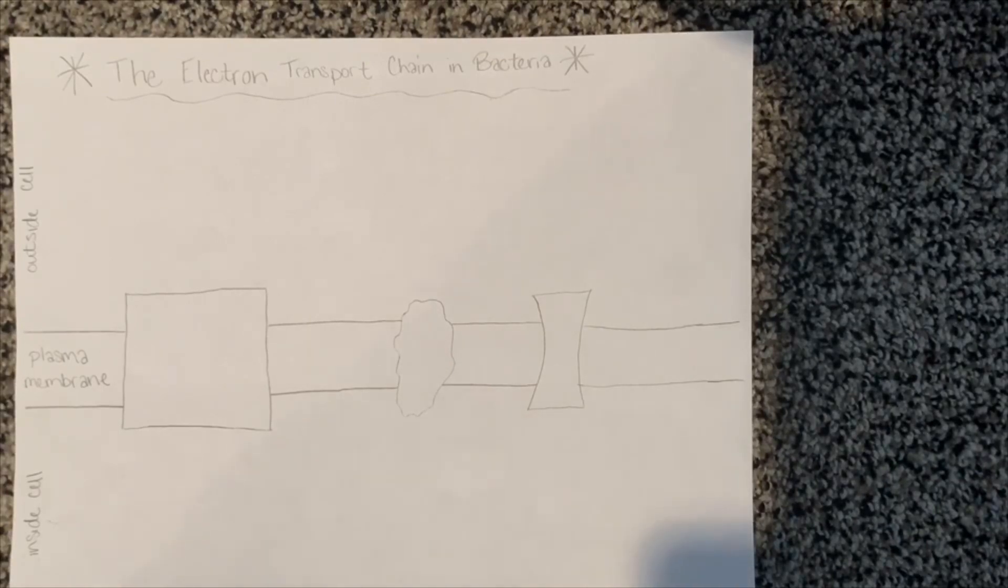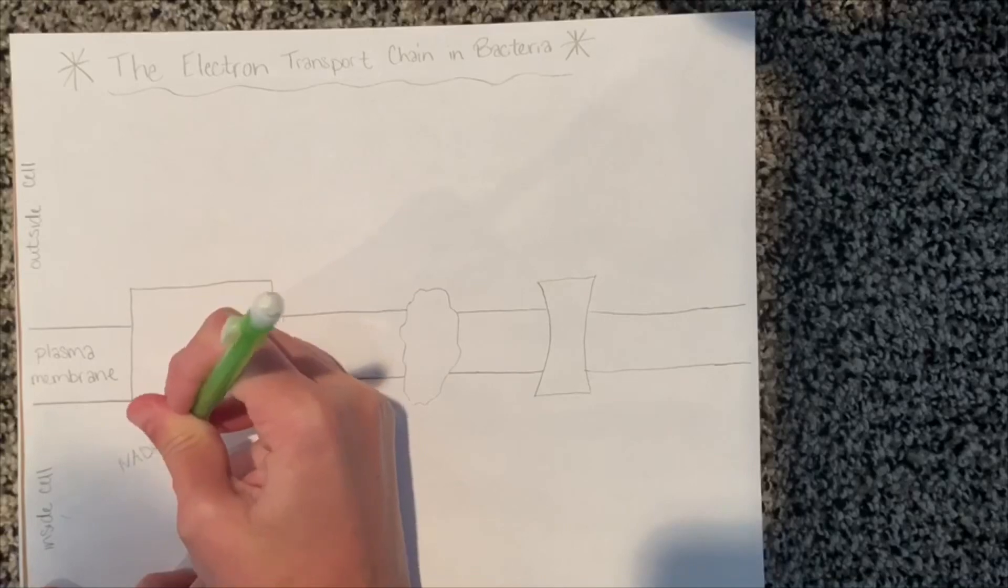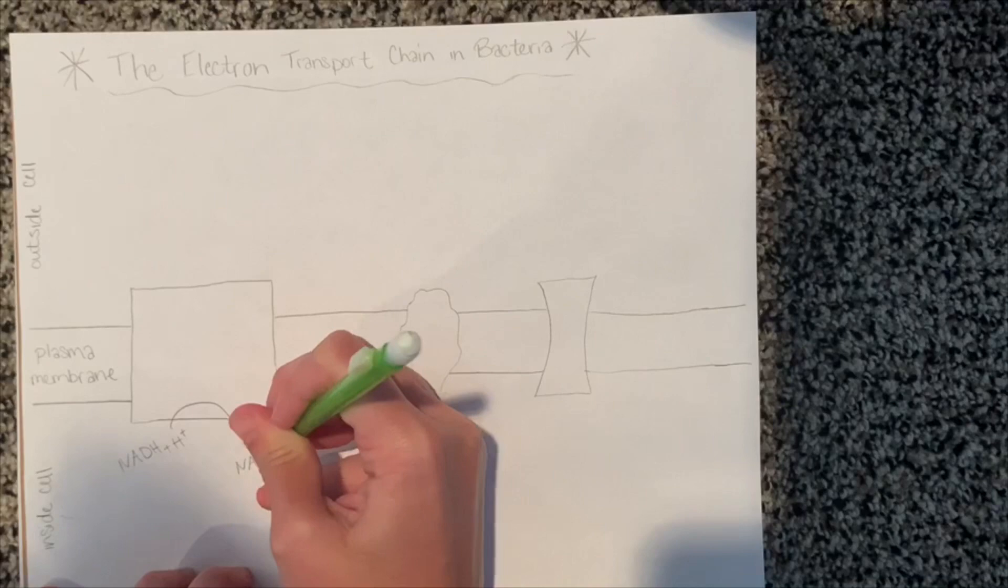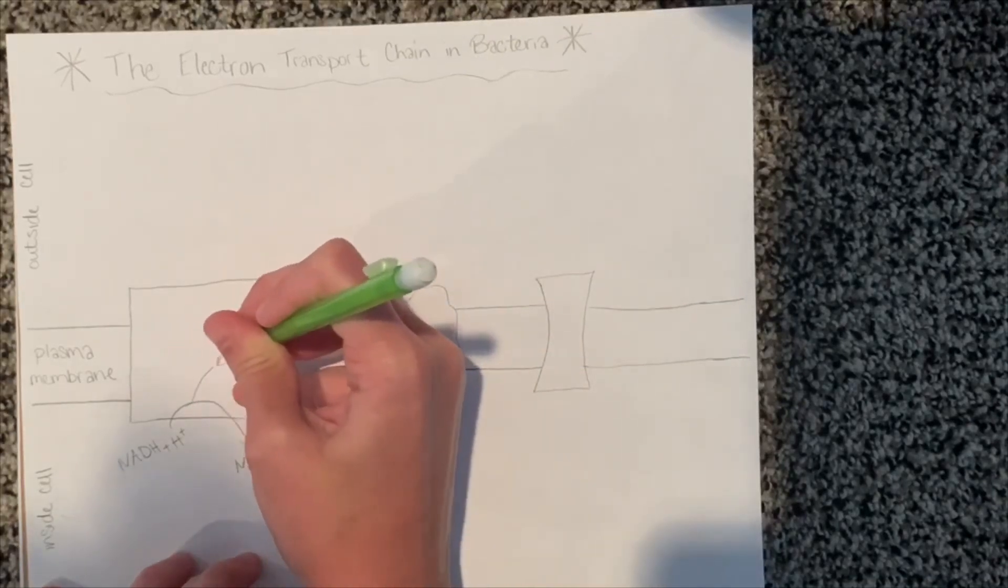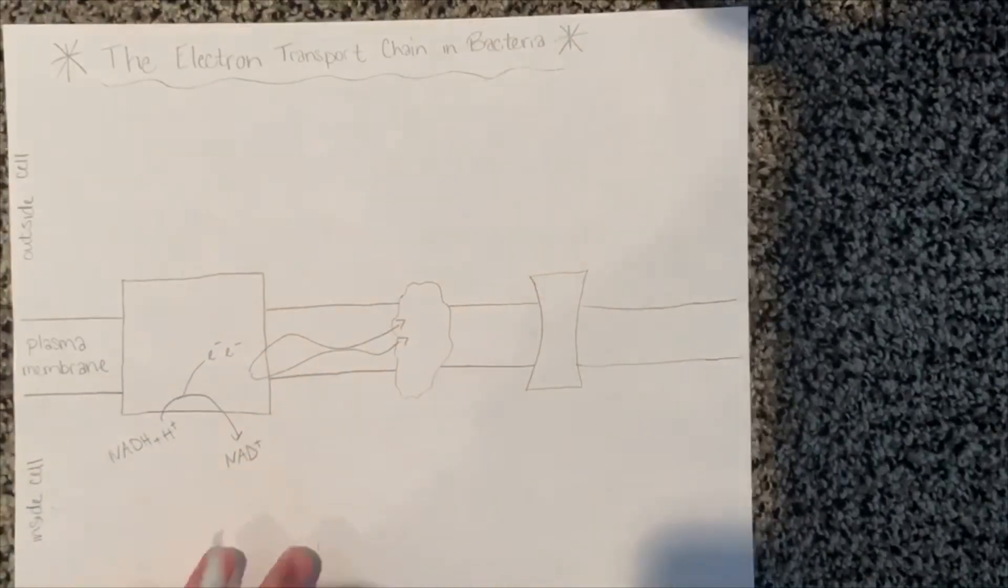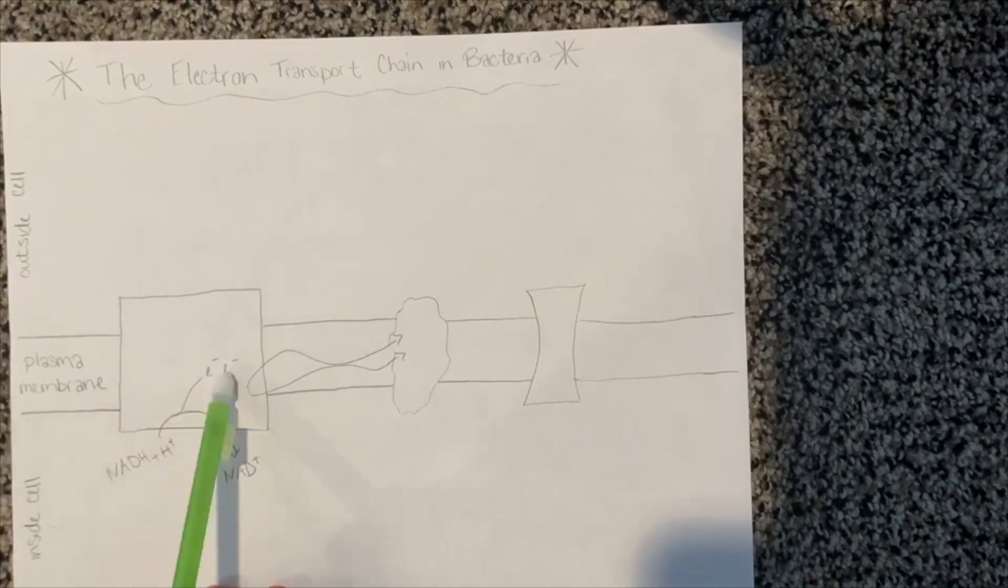First, the process starts out. Electrons are initially donated from NADH2, which is a product of prior cellular respiration processes known as glycolysis and the TCA cycle. The electrons are then carried and transferred via a series of redox reactions to different electron carriers located in the plasma membrane.